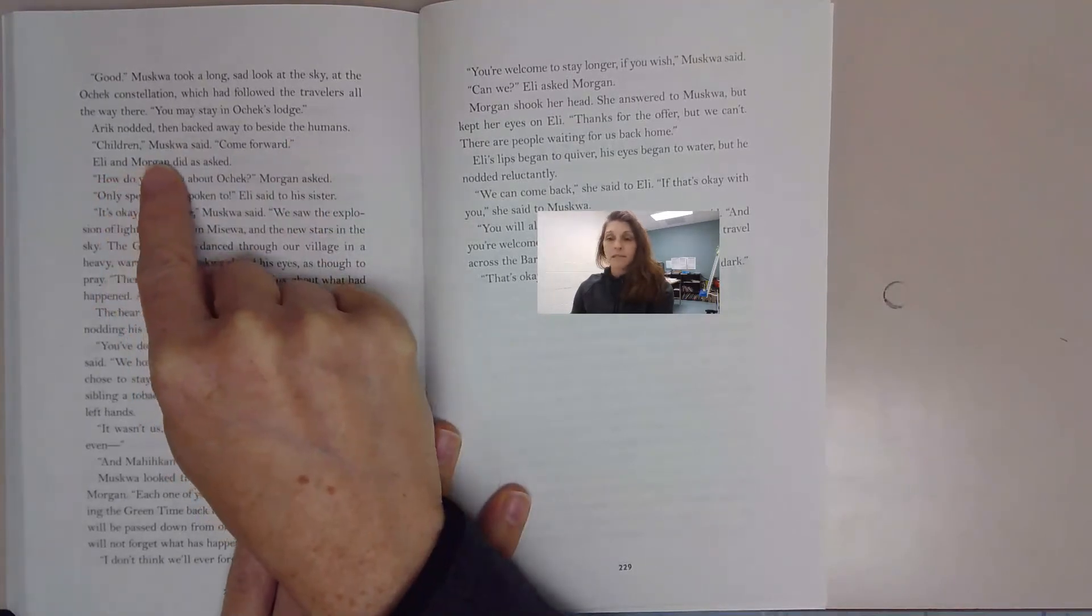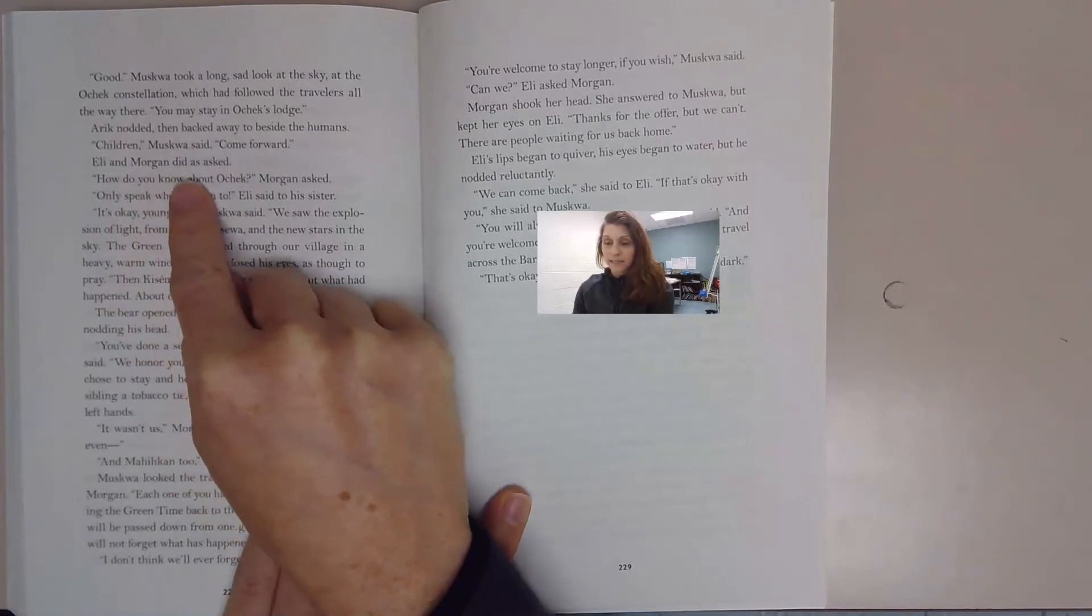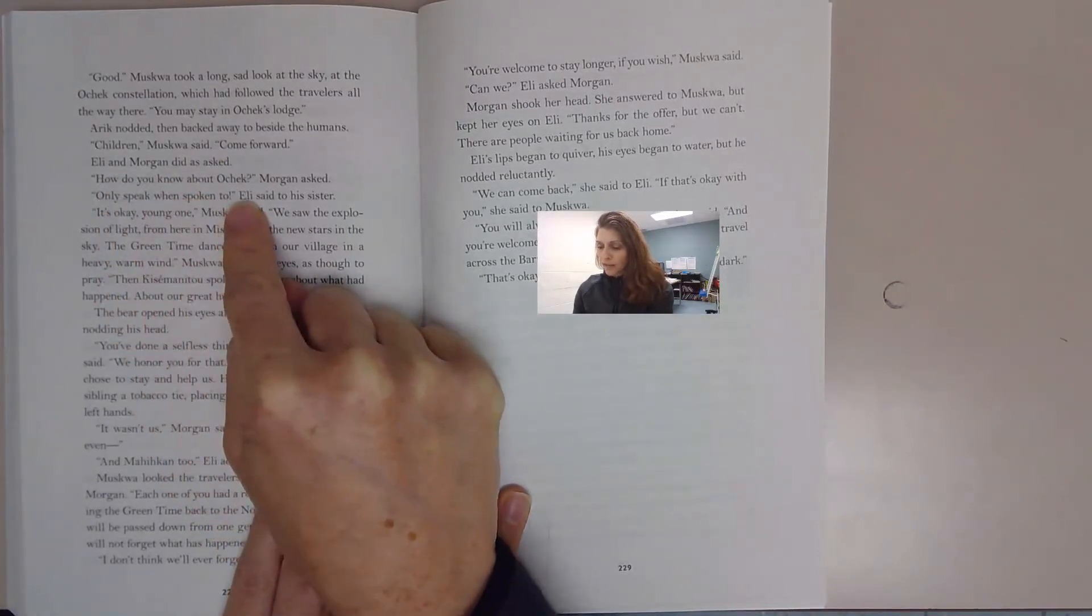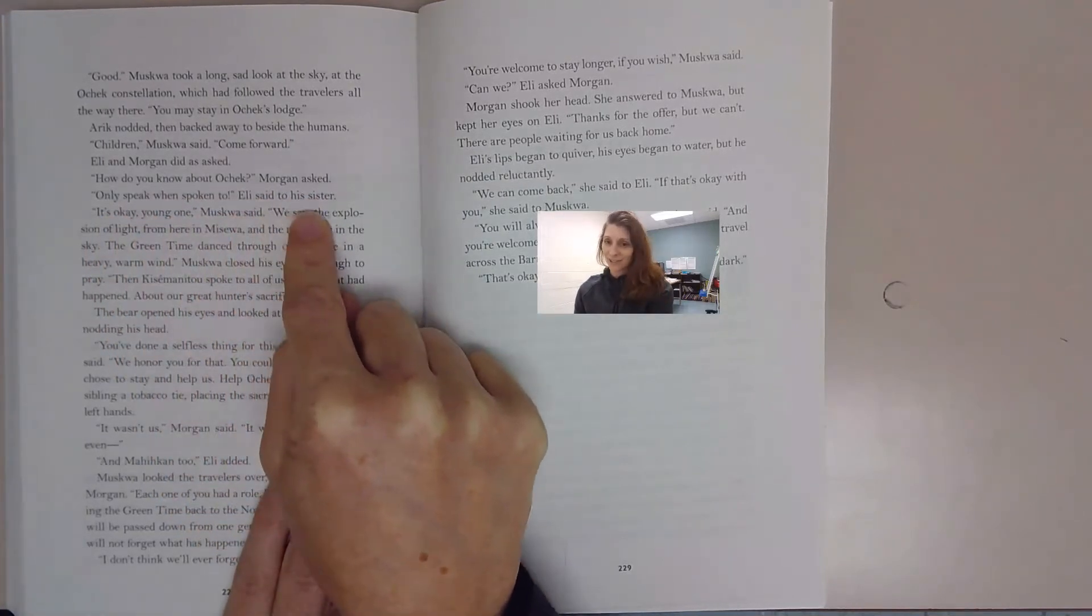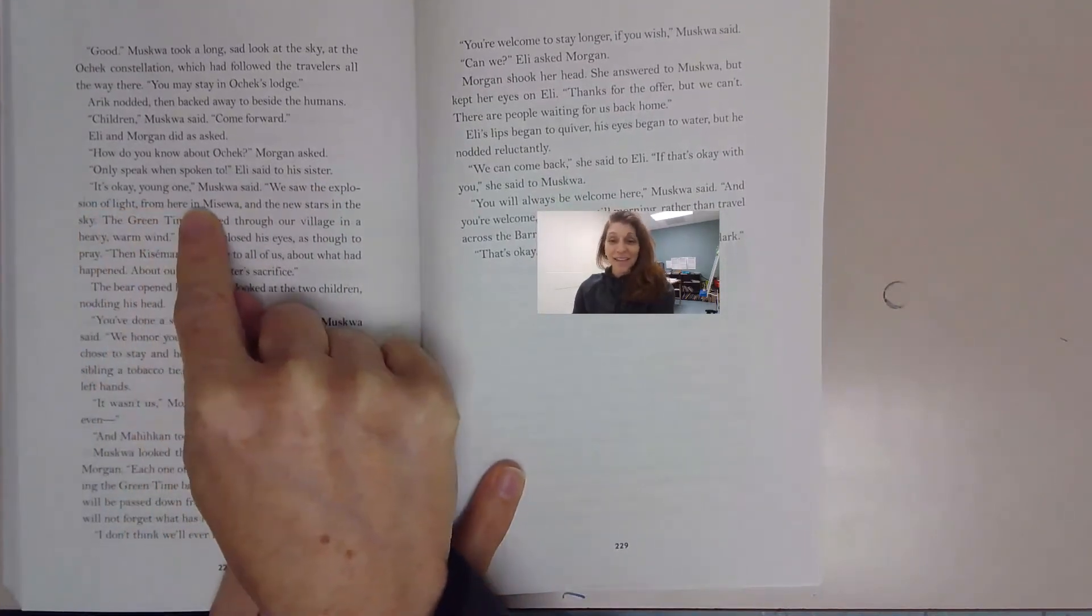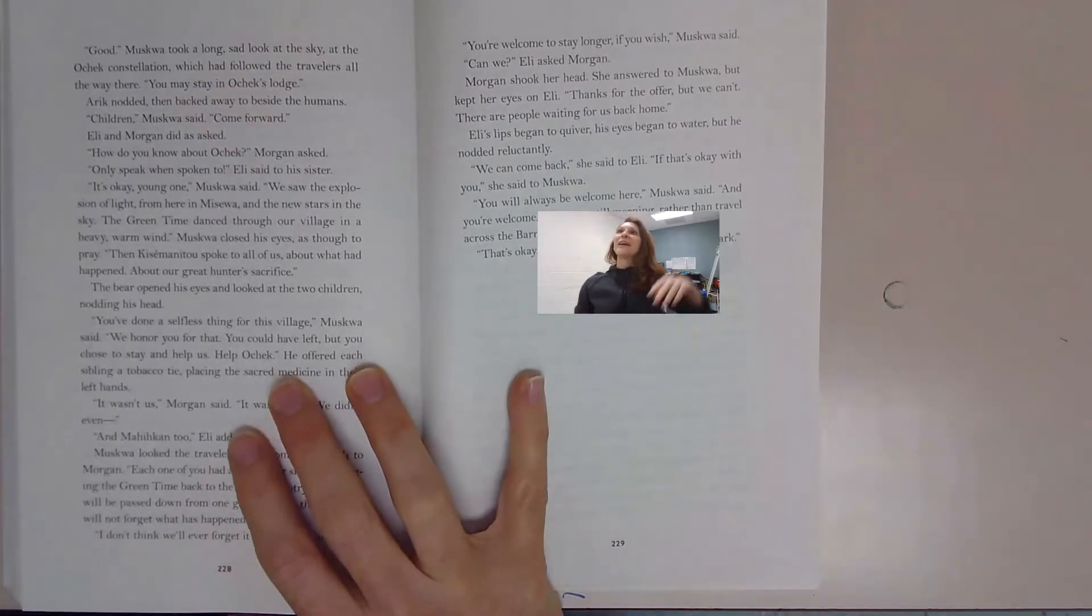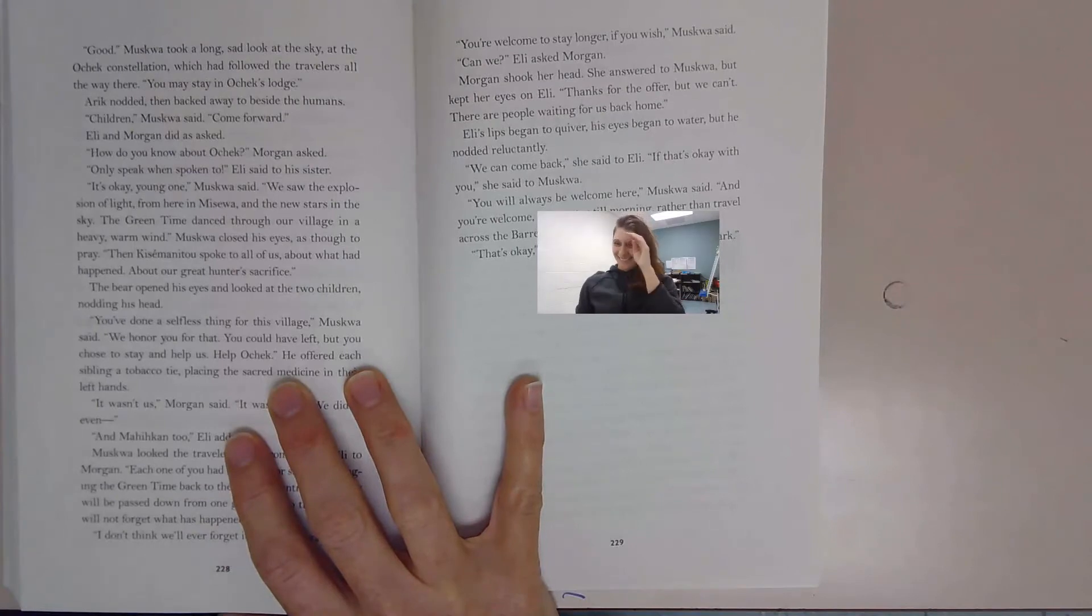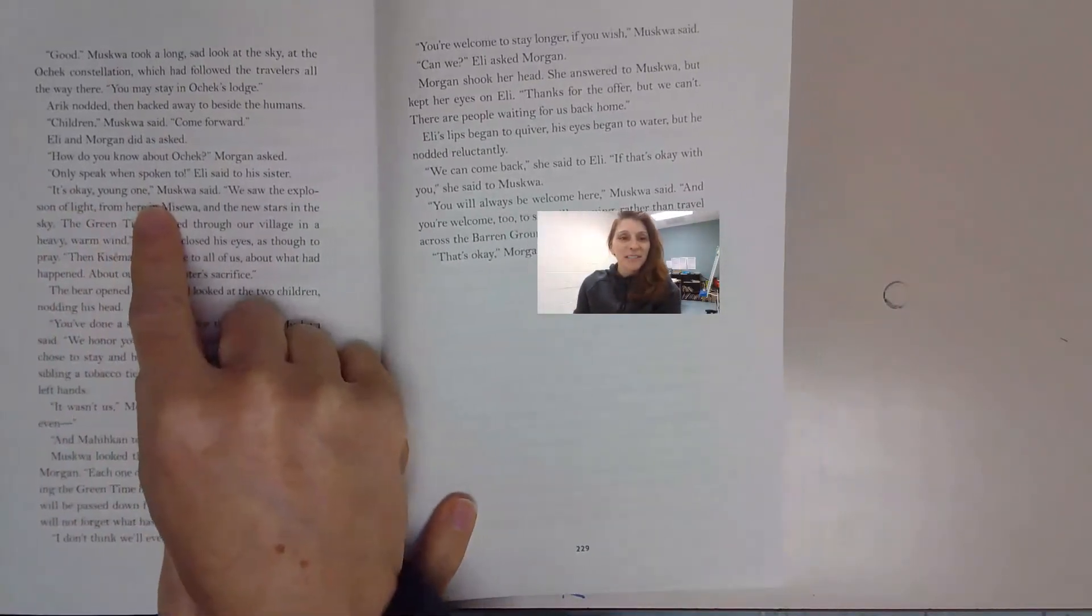Children, Muskwa said, come forward. Eli and Morgan did as asked. How do you know about Ocek? Morgan asked. Only speak when spoken to, Eli said to her sister. It's okay, young one. Again, here's Morgan, always asking questions, always needing to know all the answers to everything. How do you know about Ocek? It's okay, young one, Muskwa said.